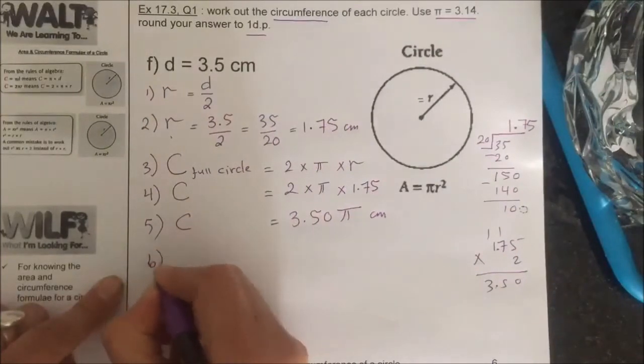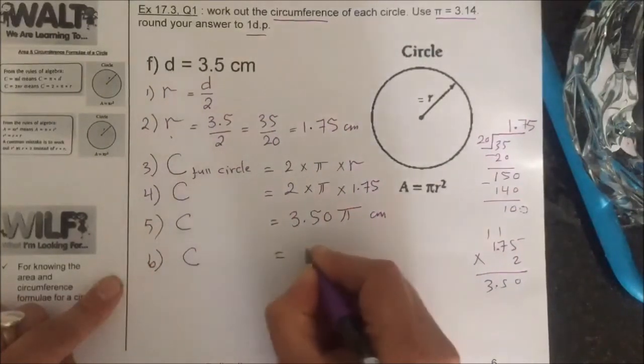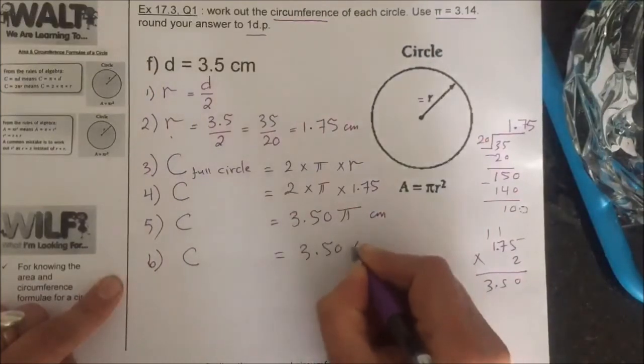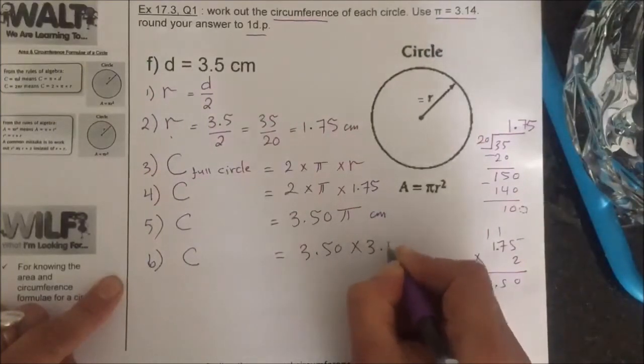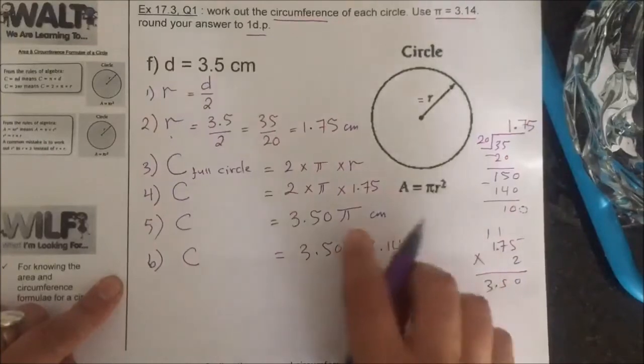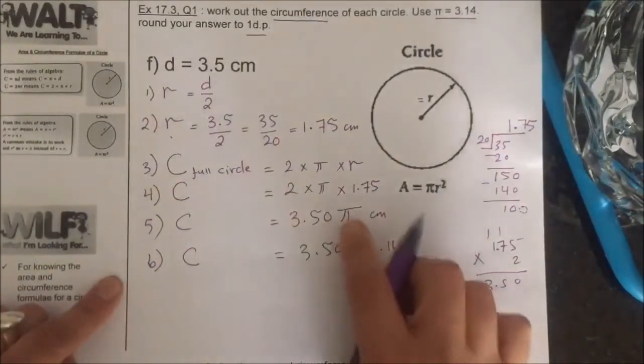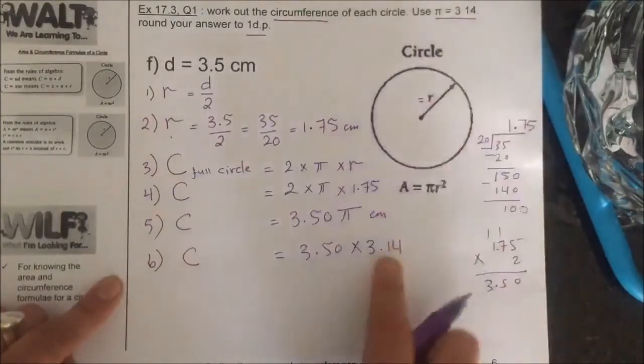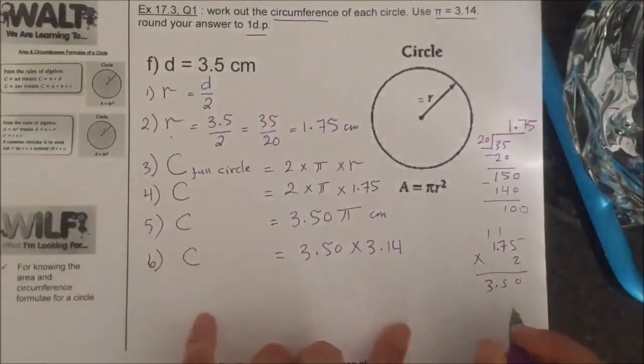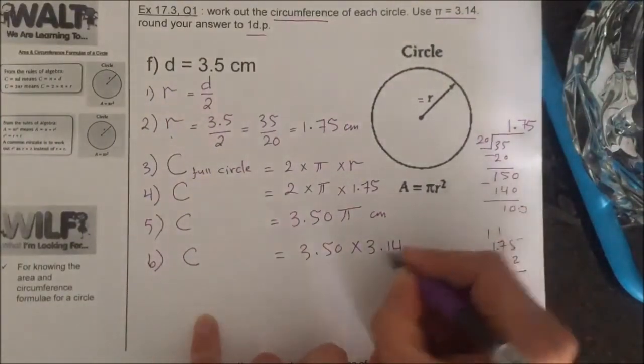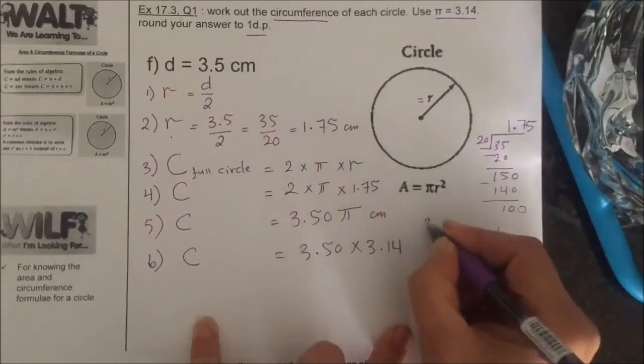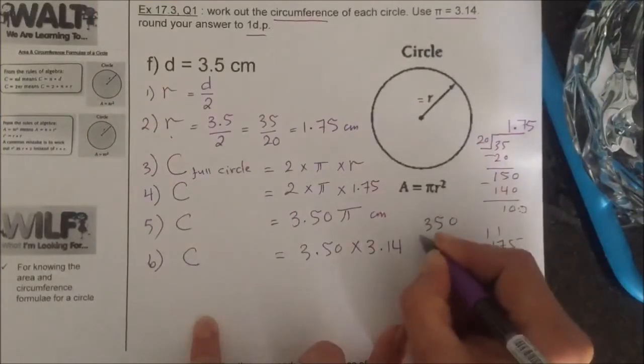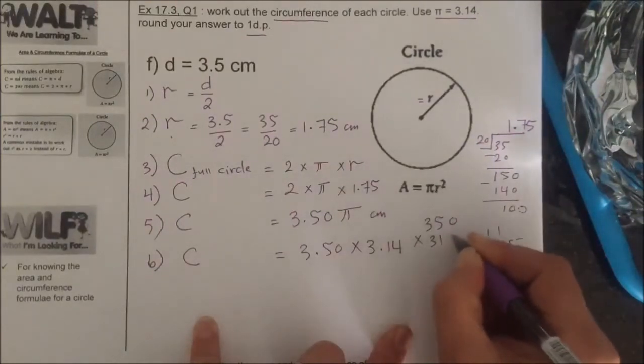So step number six: C is 3.50 times 3.14, which is the pi. I'm going to replace the pi as 3.14. And then I'm going to multiply here. Ignore the decimals. So it's 350 times 314.